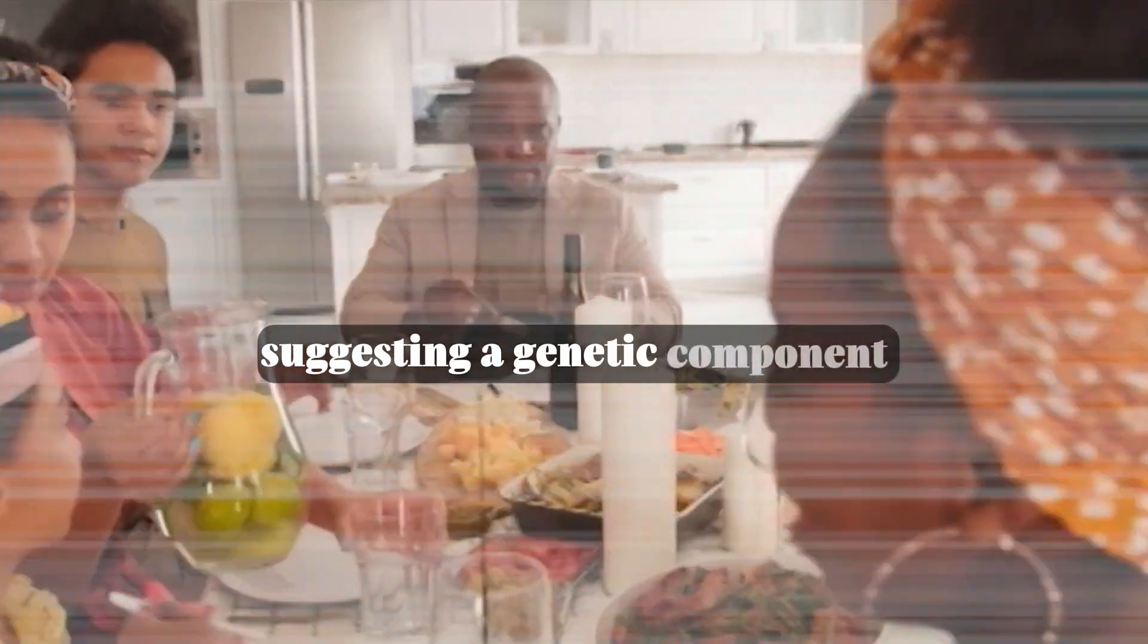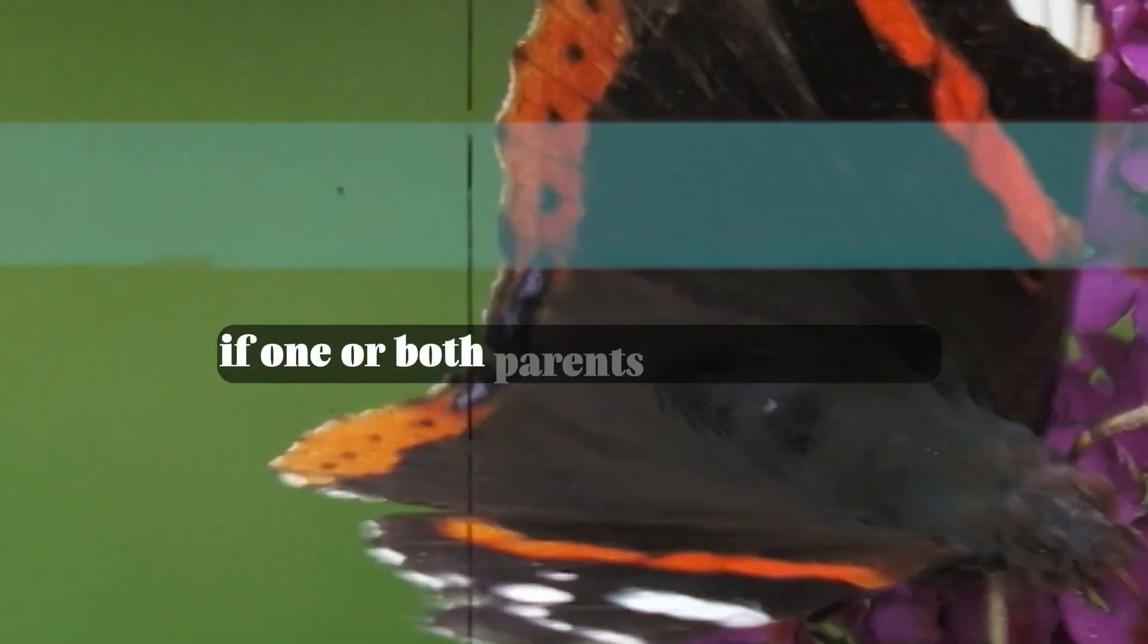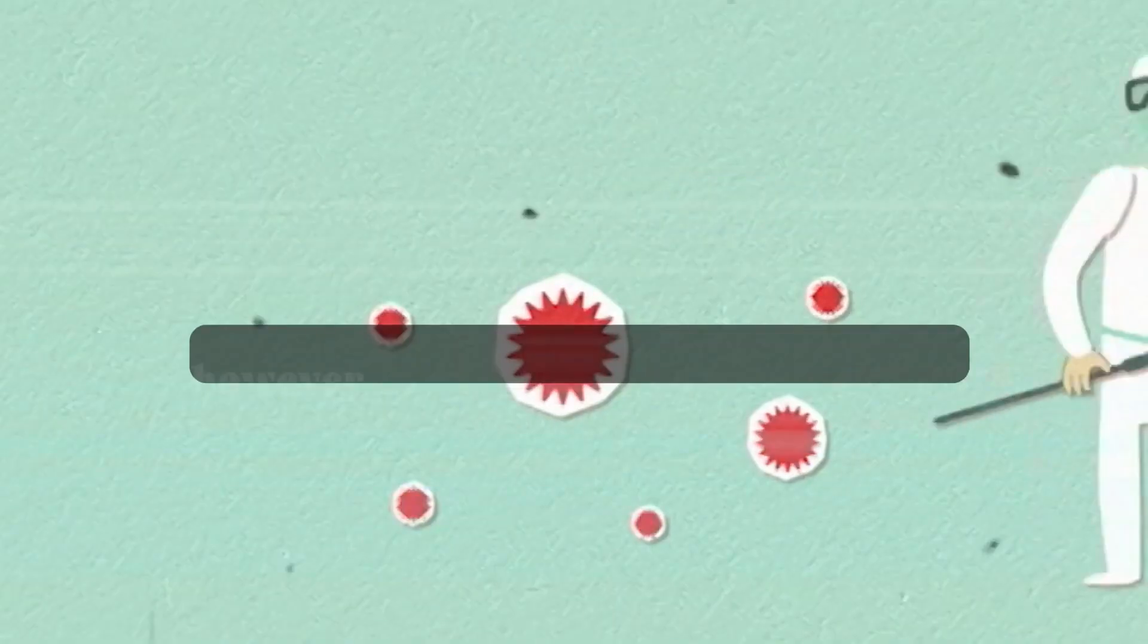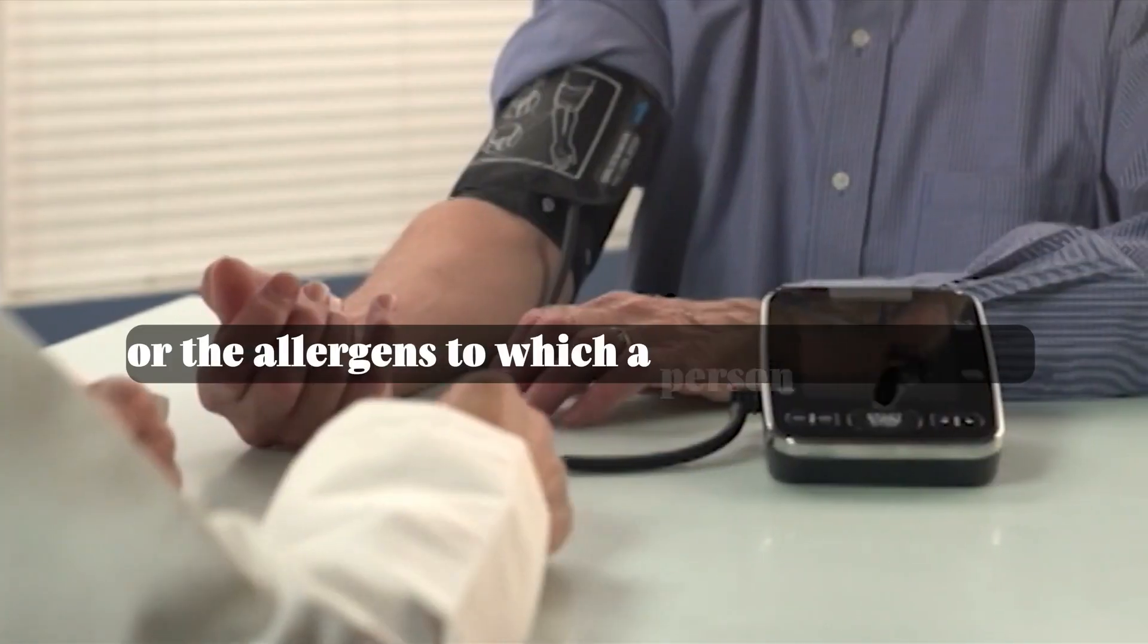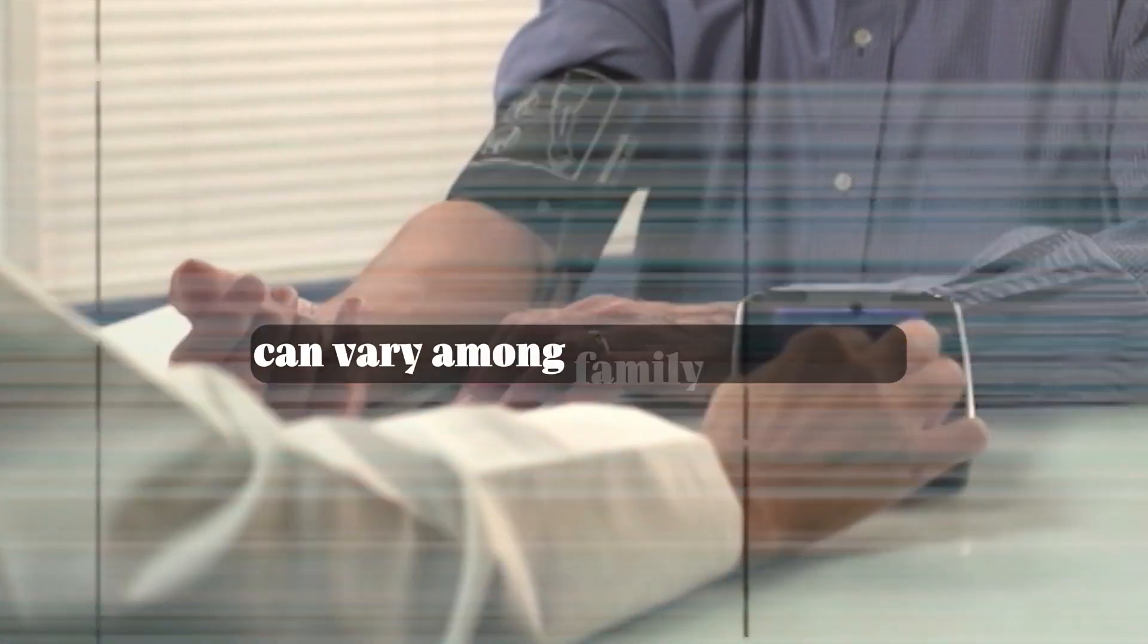If one or both parents have allergies, their children are at a higher risk of developing allergies themselves. However, the specific allergic reactions or the allergens to which a person is sensitive can vary among family members.